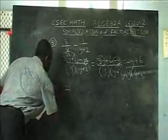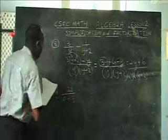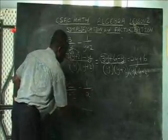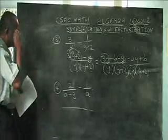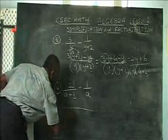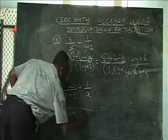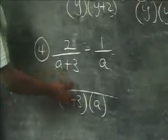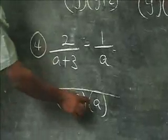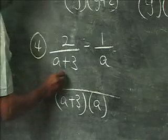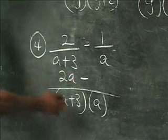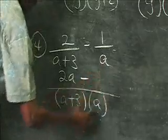We have two on a plus three, minus one on a. The LCM would be a plus three multiplied by a. Then we divide the LCM by a plus three — the a plus three will cancel, leaving it to be multiplied by two, so we simply get 2a. Minus: then we divide the LCM by a.